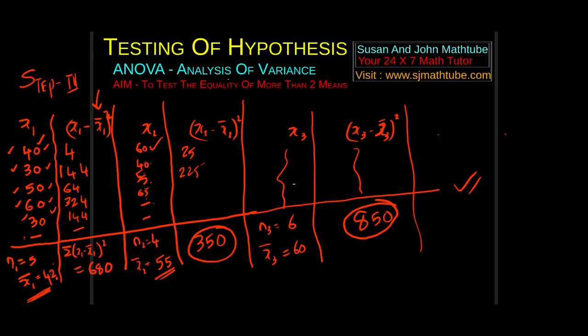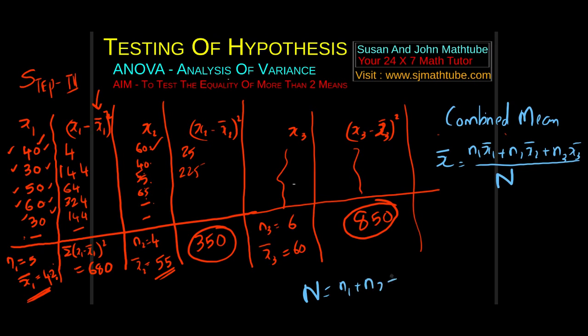Now to find one more thing, the combined mean. For combined mean, I am going to use x bar. That is n1 x1 bar plus n2 x2 bar plus n3 x3 bar, the whole divided by capital N. Capital N means n1 plus n2 plus n3. That is 6 plus 4 is 10, 10 plus 5 is 15. You can do the calculation by yourself. I got 52.67.